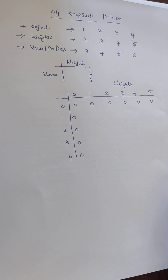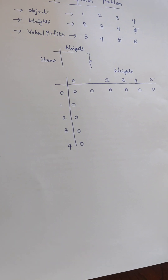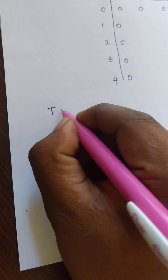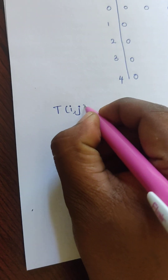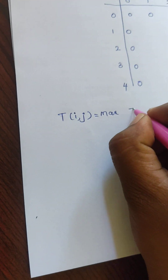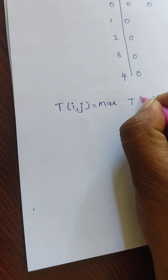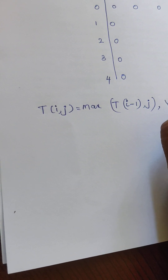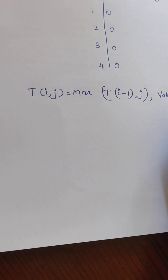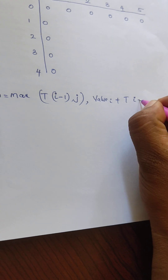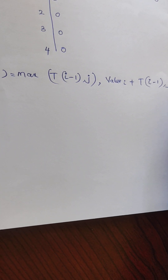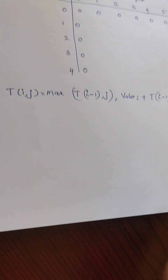Based on this matrix representation, to calculate the remaining values we use the tabular formula: T(i, j) = max of T(i−1, j) and value(i) + T(i−1, j − weight(i)). This is the formula we will use.